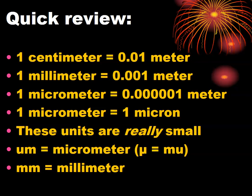A quick review of the metric system. One centimeter is one one-hundredth of a meter — less than half an inch. One millimeter is one one-thousandth of a meter. One micrometer is one one-millionth of a meter, really very small. Micrometers are often expressed as microns. You may also see the Greek letter mu in front of an M, meaning micrometer, as opposed to MM for millimeter. We'll be using these units throughout this presentation.